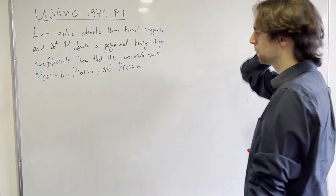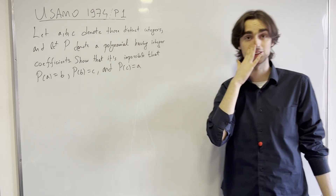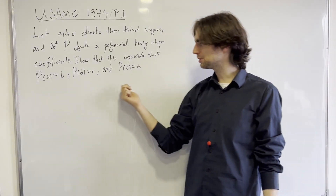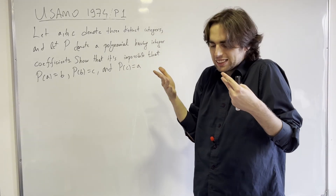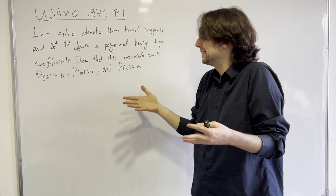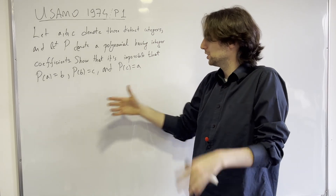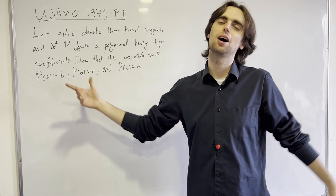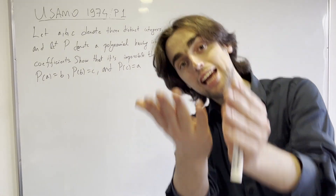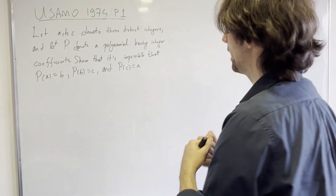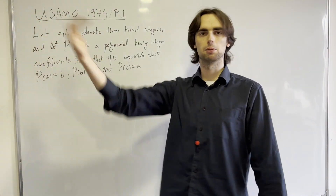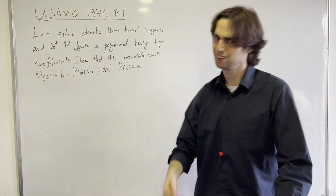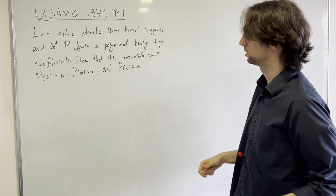If you'd like to go along with us, give it a go for the next 5-10 minutes. The first thing here is we must show it's impossible that something holds true. How do we prove those statements? The answer is we say: let's assume it's possible, and then let's get to a contradiction. That's really the quickest way to do these sorts of things.